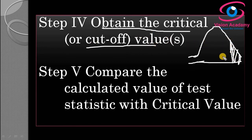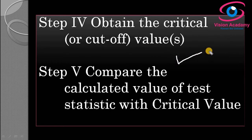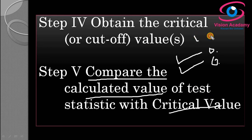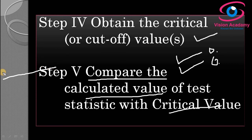Now you have the calculated value of the test statistic from step 3, and the critical value from step 4. You need to compare the calculated test statistic with the critical value. After comparing, locate the position of the calculated test statistic — whether it lies in the rejection region or the non-rejection region.